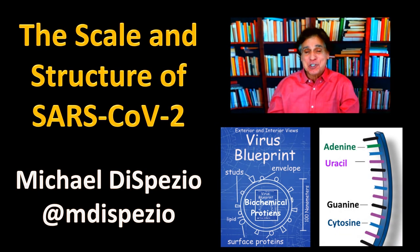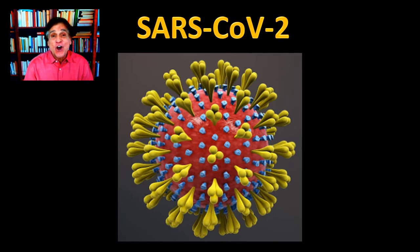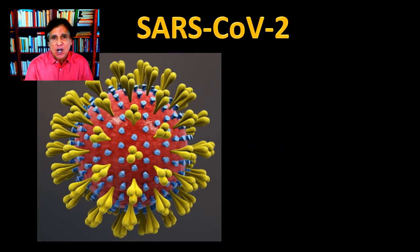Hi, I'm Michael Dispezio, and in this short lesson I'd like to address the structure of SARS-CoV-2, the virus that causes coronavirus disease. This is an artist's interpretation of what SARS-CoV-2 looks like. Scientists tend to call virus particles virions, and let's take a closer look at the scale and structure of this particle.